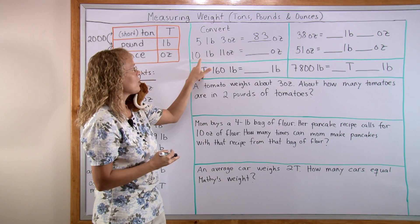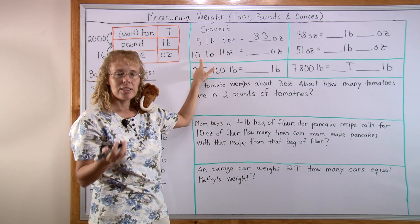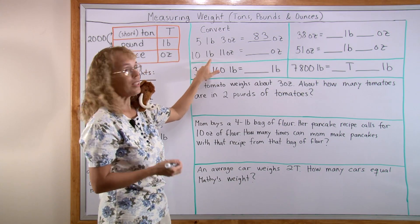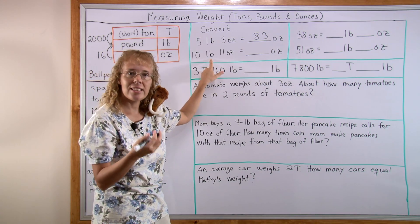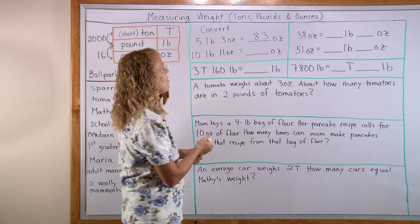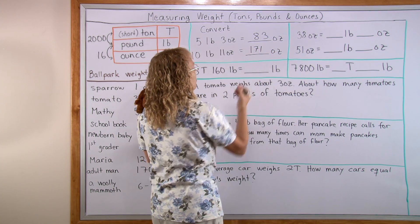10 pounds, 11 ounces. This is easy. One pound is 16 ounces, so 10 pounds is 10 times that: 160 ounces. Plus 11 makes 171 ounces.